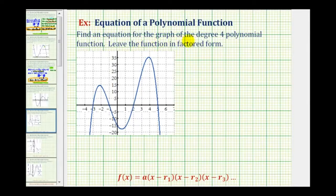We want to find an equation for the graph of the degree four polynomial function and leave the function in factored form. Because we have a degree four polynomial function, we should recognize that we have at most four real rational zeros or roots of the function. Looking at the graph, we can see that all four roots or zeros are rational because this graph has four x-intercepts.